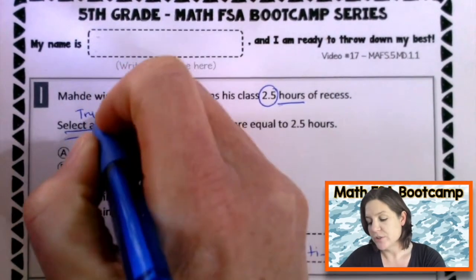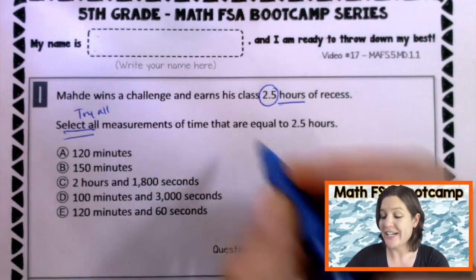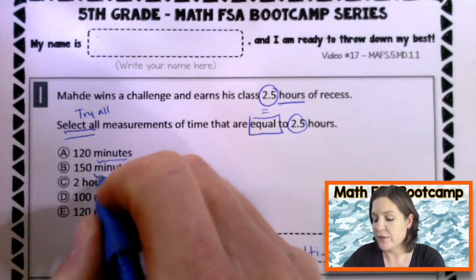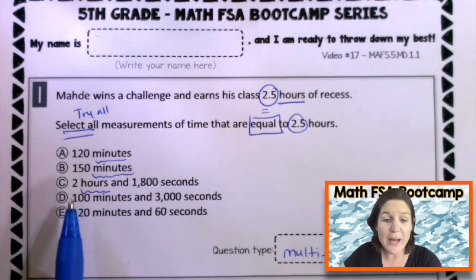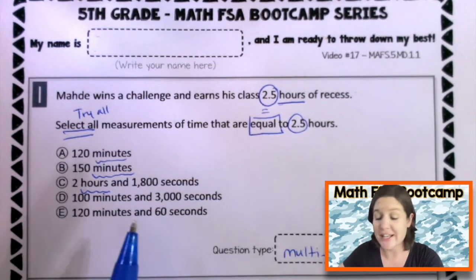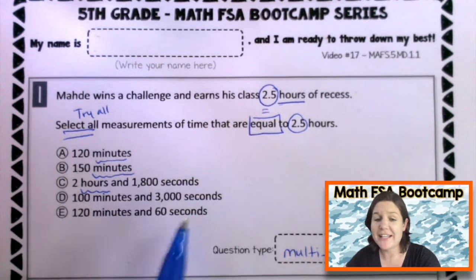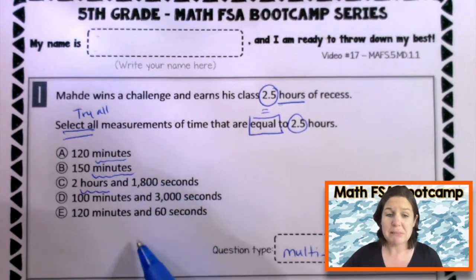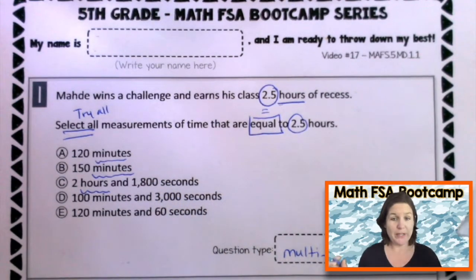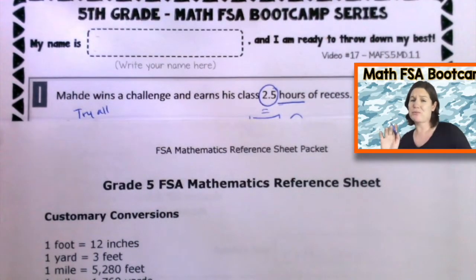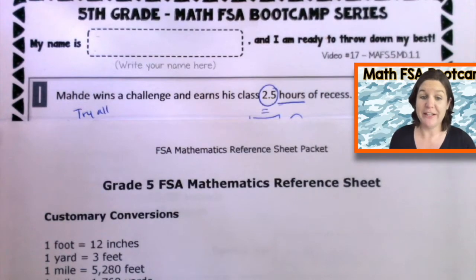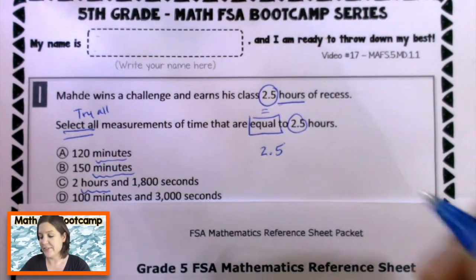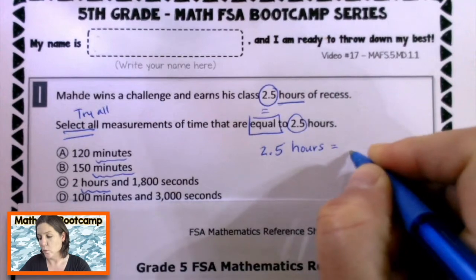Select all means we're going to try all. Select all the measurements of time that are equal to two and a half hours. We have 120 minutes, 150 minutes. For C, we have two hours and 1,800 seconds. We have minutes and seconds. So, what we are doing here is we are converting measurements. We need to go from hours into minutes and possibly seconds. We need to make sure that we are using our grade five FSA mathematics reference sheet that you will definitely get on the test.